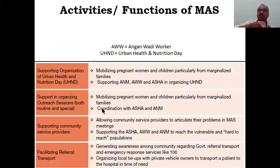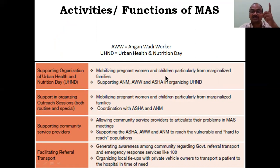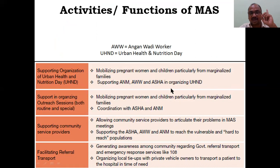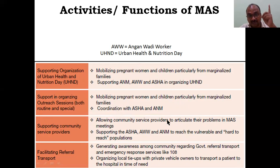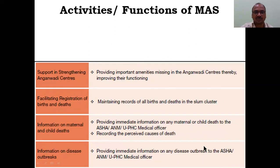Members of MASS include: members of local CBO (Community-Based Organization), ICDS (Integrated Child Development Service Scheme) frontline staff, existing Self-Help Groups, service users, local women, and ASHA workers. There are eight functions of MASS. The first four include: supporting urban health and nutrition activities, mobilizing pregnant women and children from marginalized families, supporting ANM and Anganwadi workers (AWW), and supporting ASHA workers.